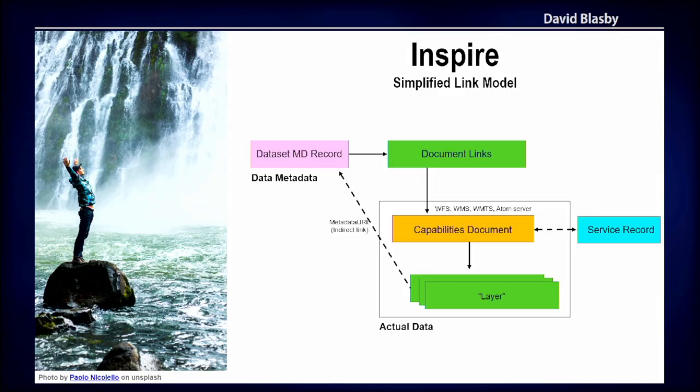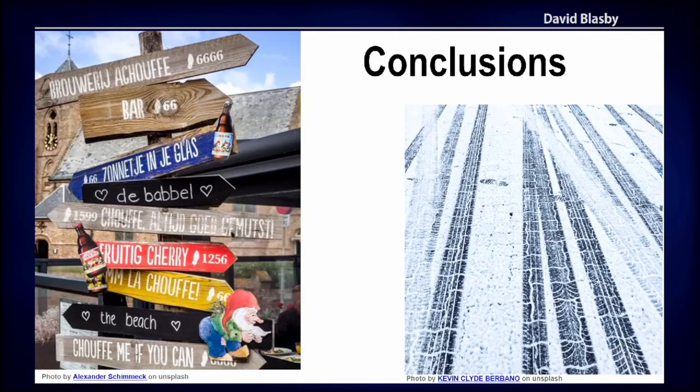If you also add the metadata URL for each of the layers in your capabilities file, you have really simple bi-directional connectivity. I can't really emphasize how much easier this is — because this is just direct links as opposed to having to search through a database of all your endpoints and deal with that.